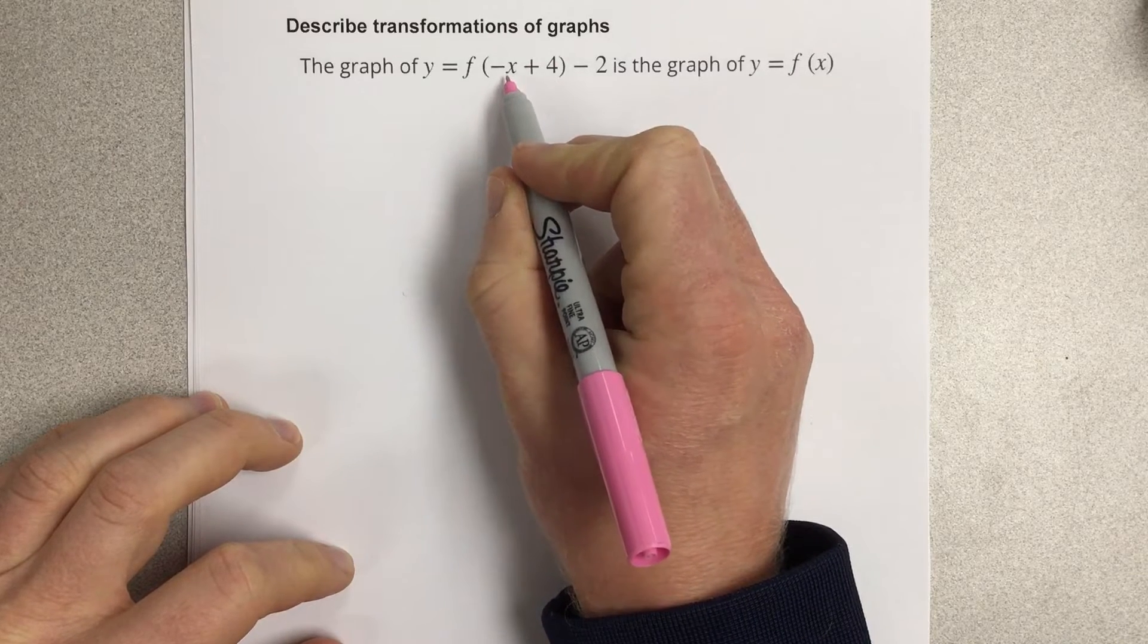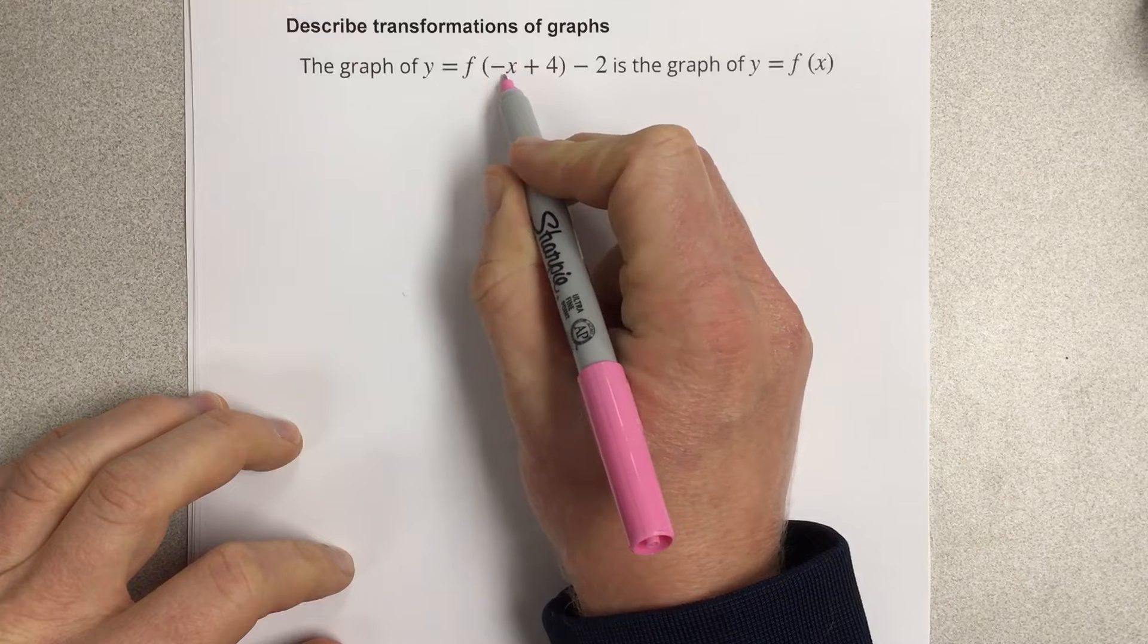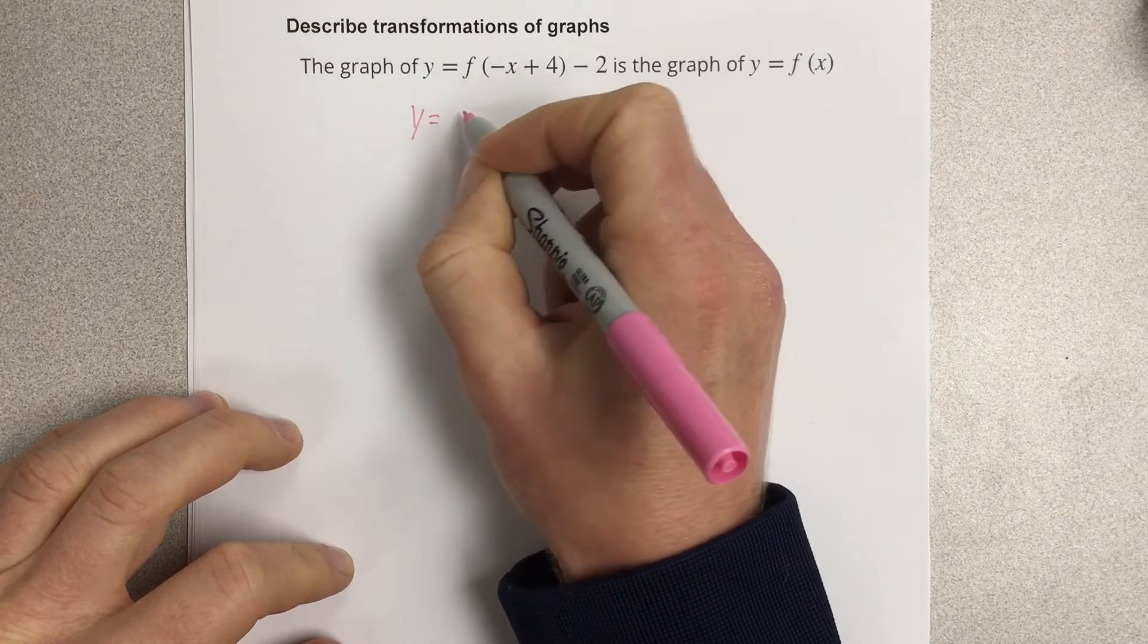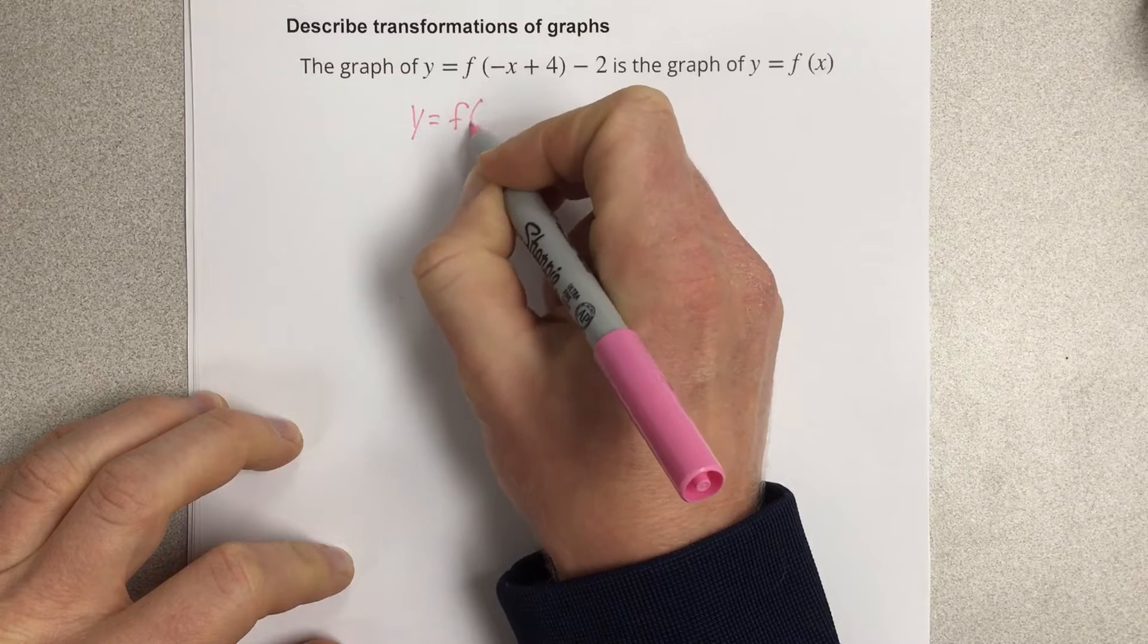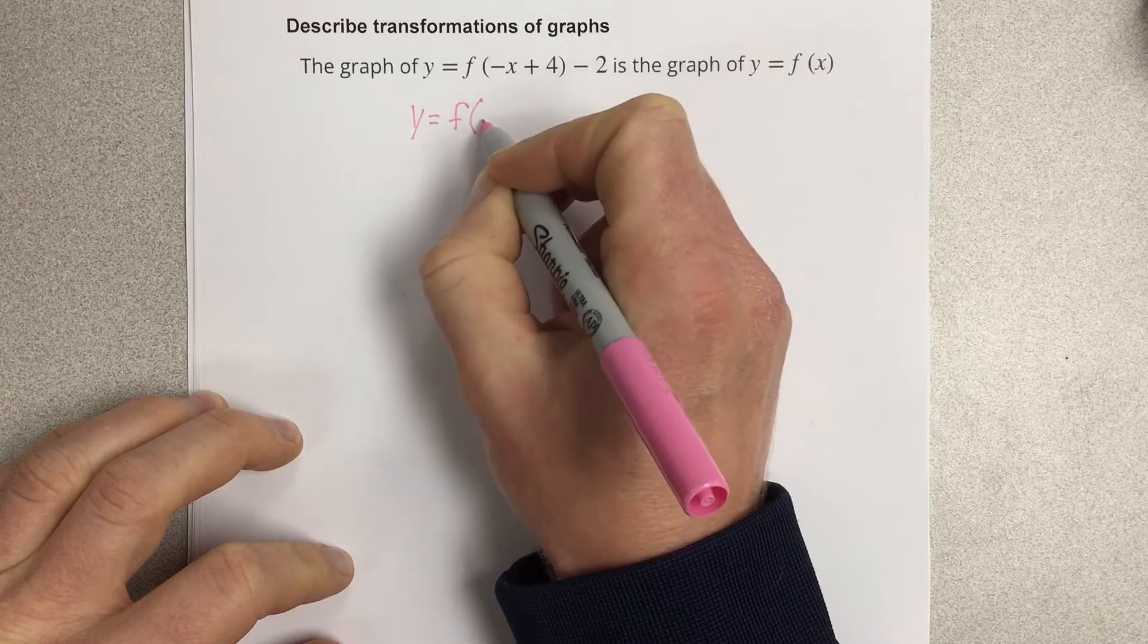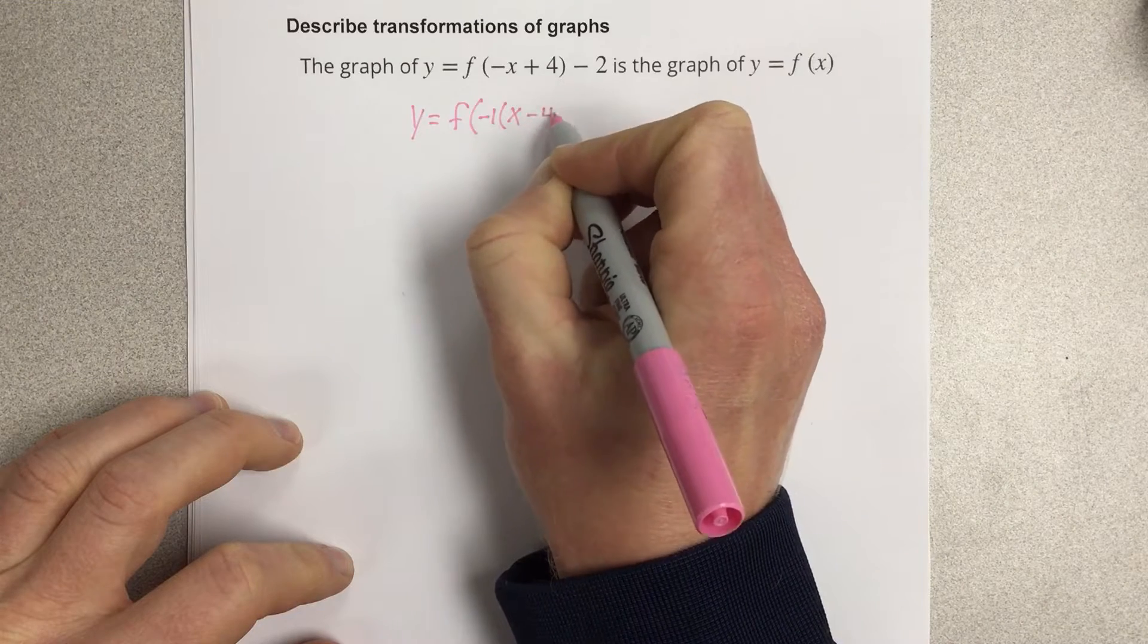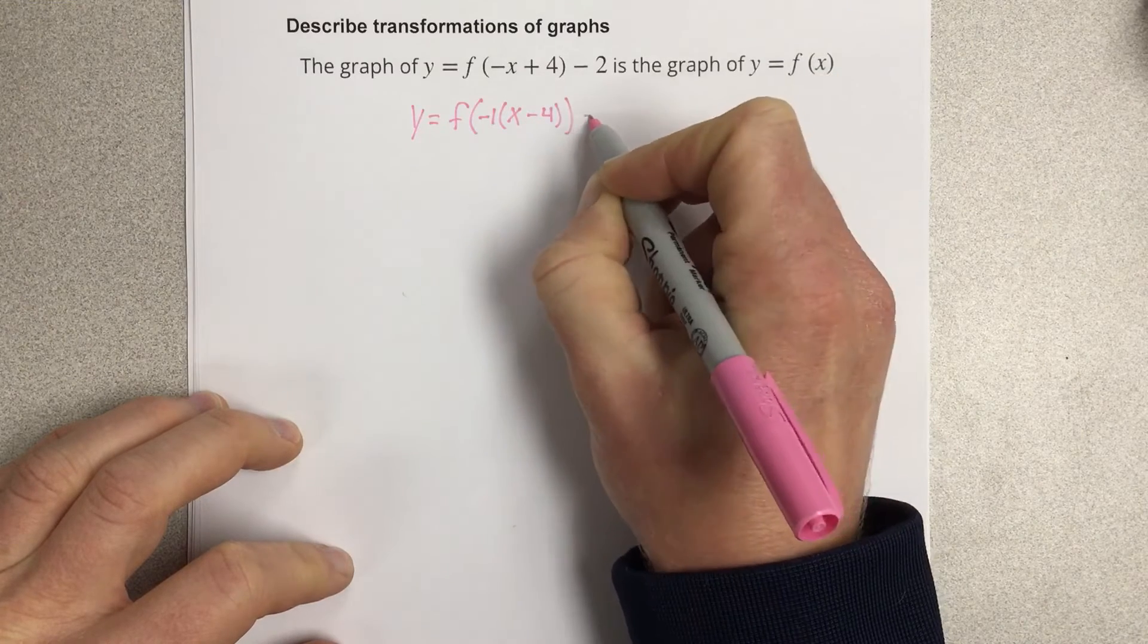The first thing you want to do is notice that you have a negative in front of the x value. Our first step here would be to factor the negative out of these two terms, which would be negative 1 times (x minus 4) minus 2.